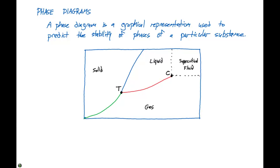The last section in this chapter deals with phase diagrams. A phase diagram is a graphical representation used to predict the stability of phases of a particular substance.